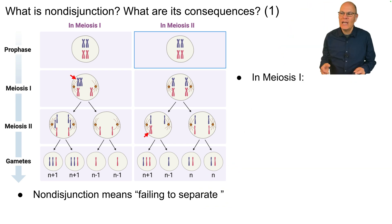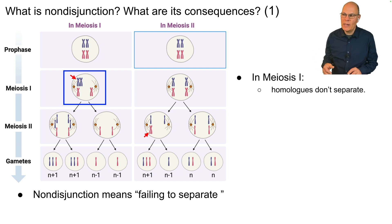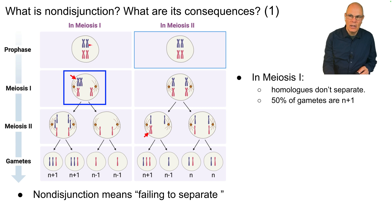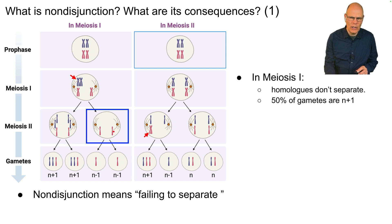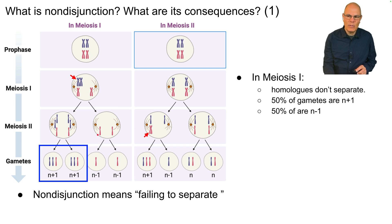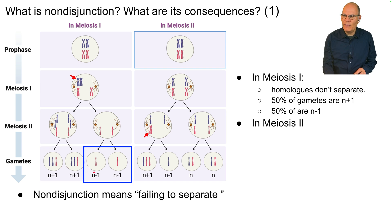There are a couple of variations. In meiosis I, the homologs don't separate. The blue chromosome's homologs stayed together. As a result, in meiosis II we have three chromatids on one side and three on the other, with one on each remaining side. So 50% of the gametes are N plus one — the haploid number with one extra — and 50% are N minus one, the haploid number missing a chromosome.